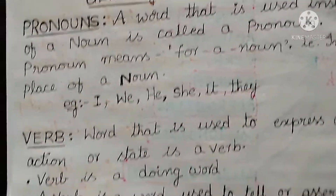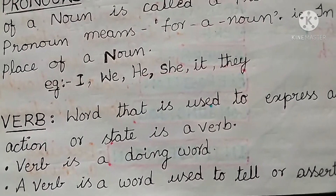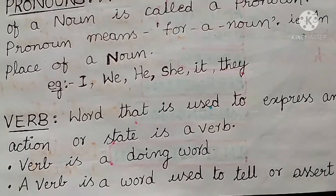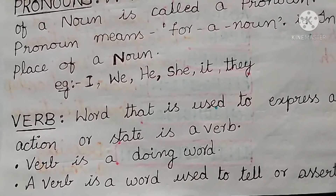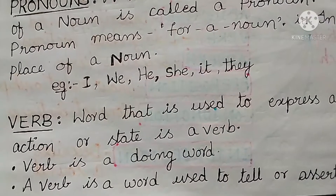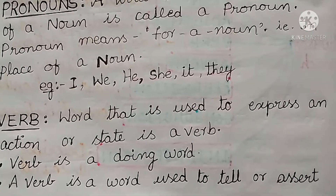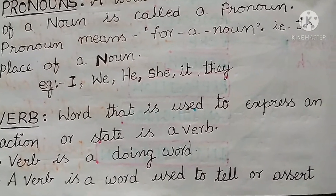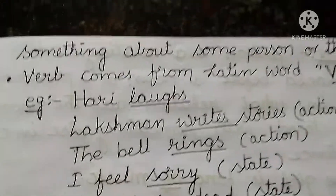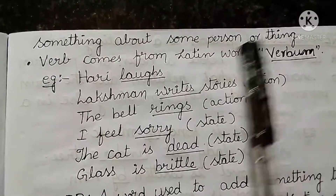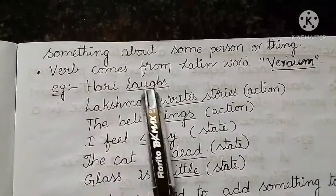Next, coming to the verb. A verb is a word used to express an action, state, or being. Verb is a doing word. A verb is a word used to tell or assert something about some person or thing. Verb comes from the Latin word 'verbum.' There is a main verb and sometimes one or more helping words. A verb must agree with its subject in number — both singular or both plural.